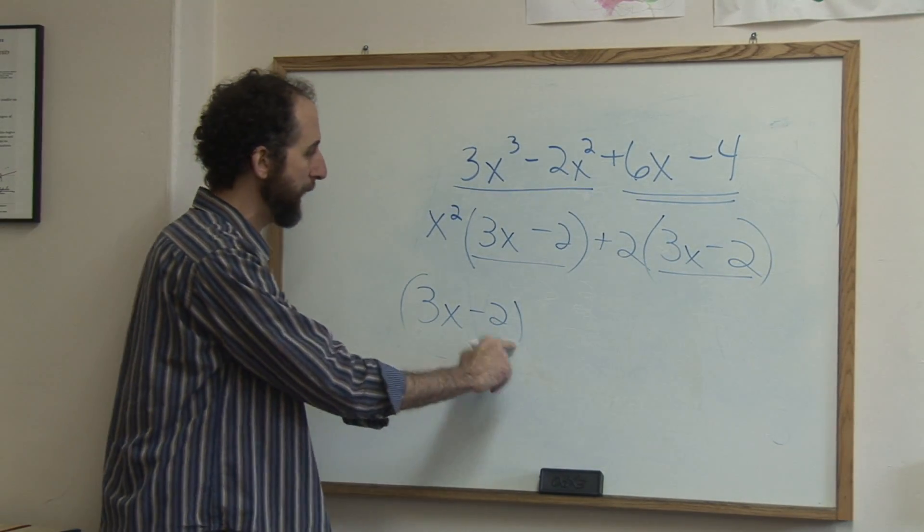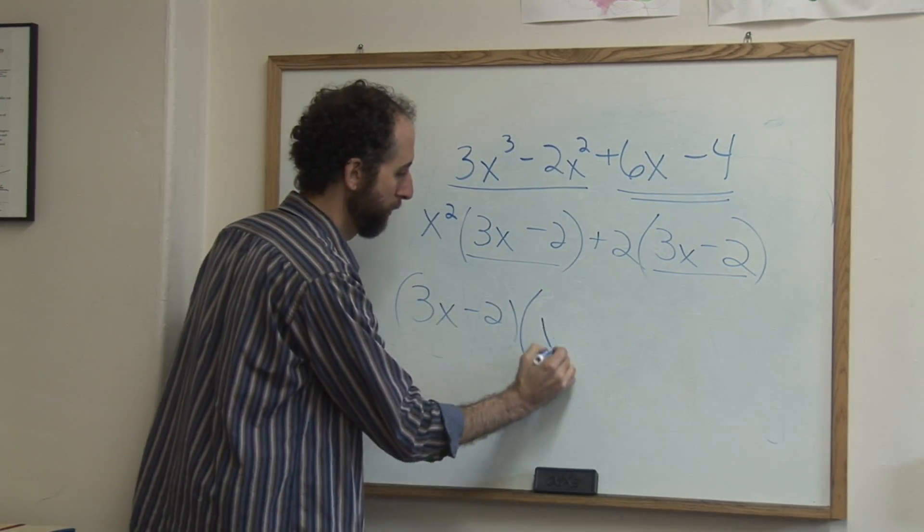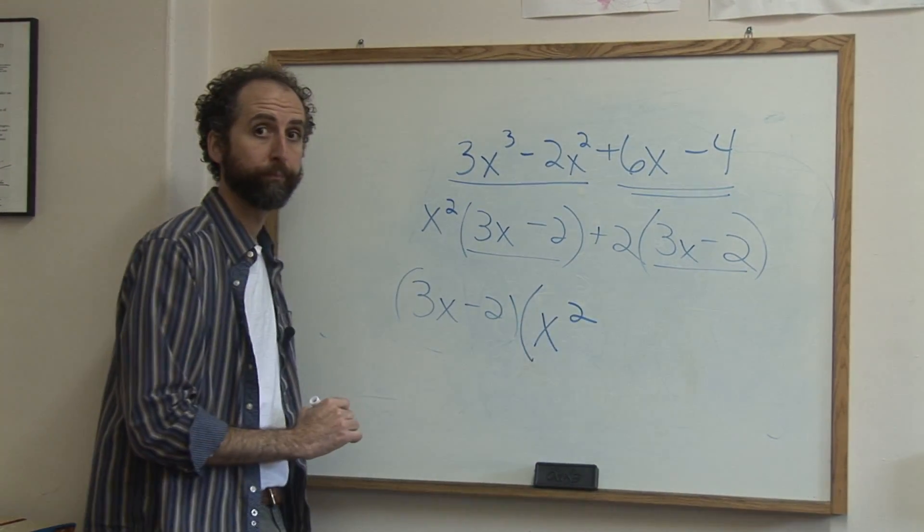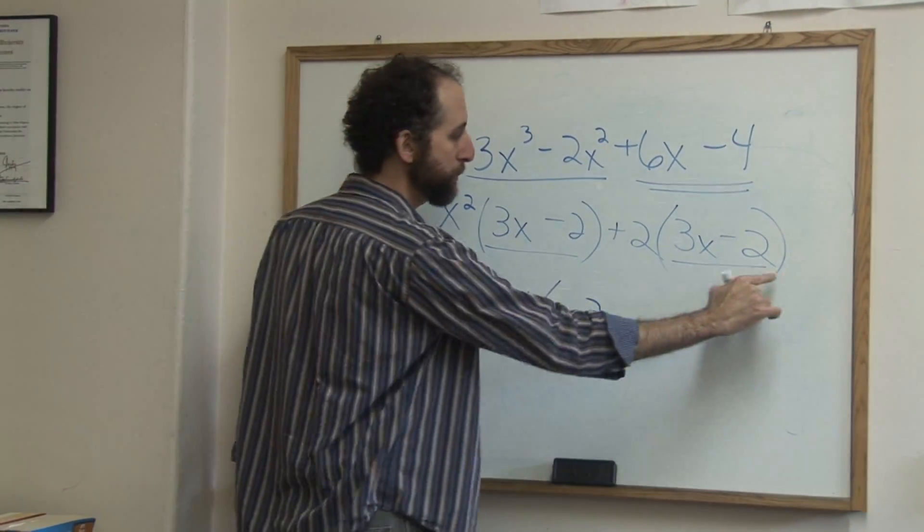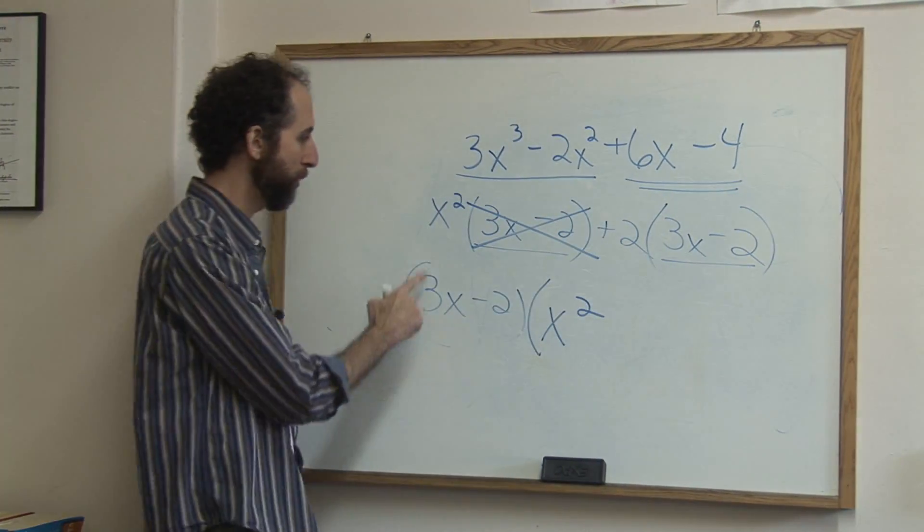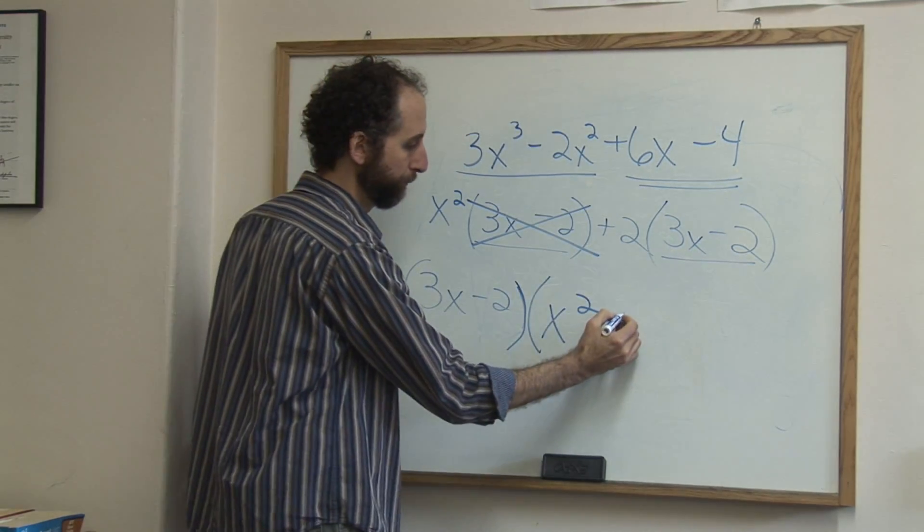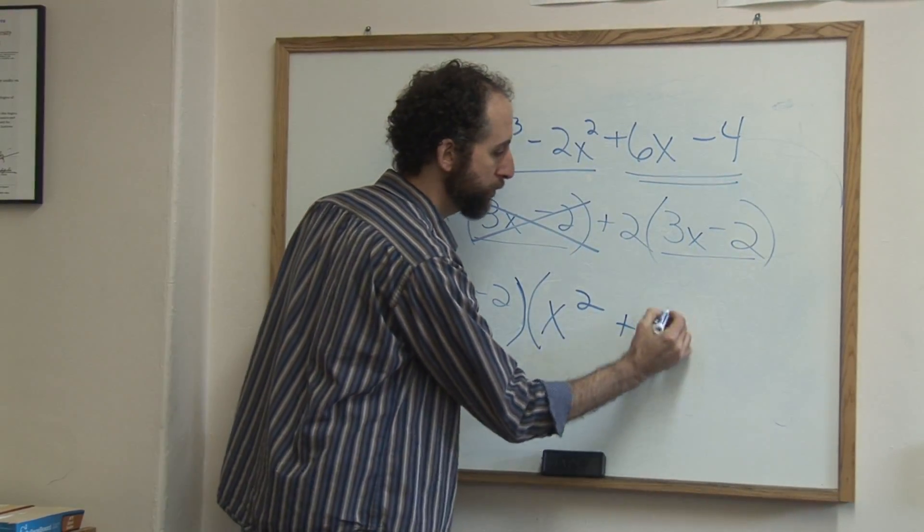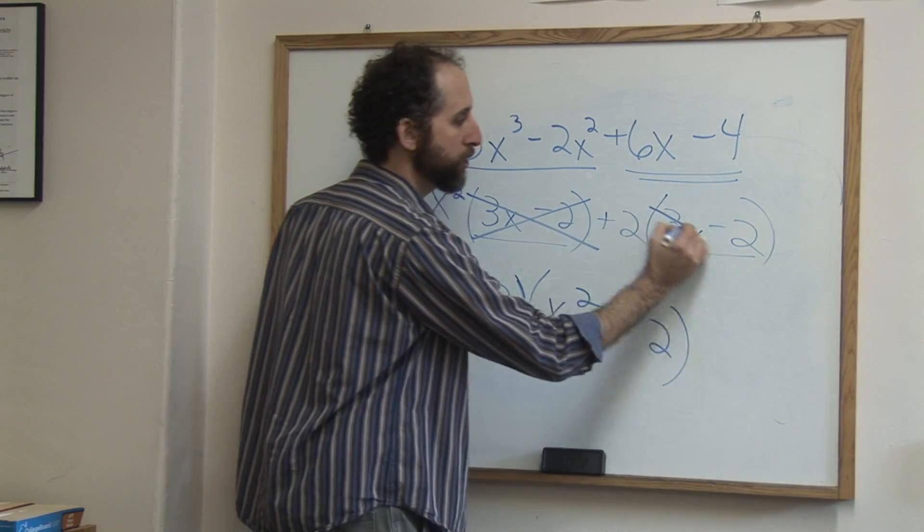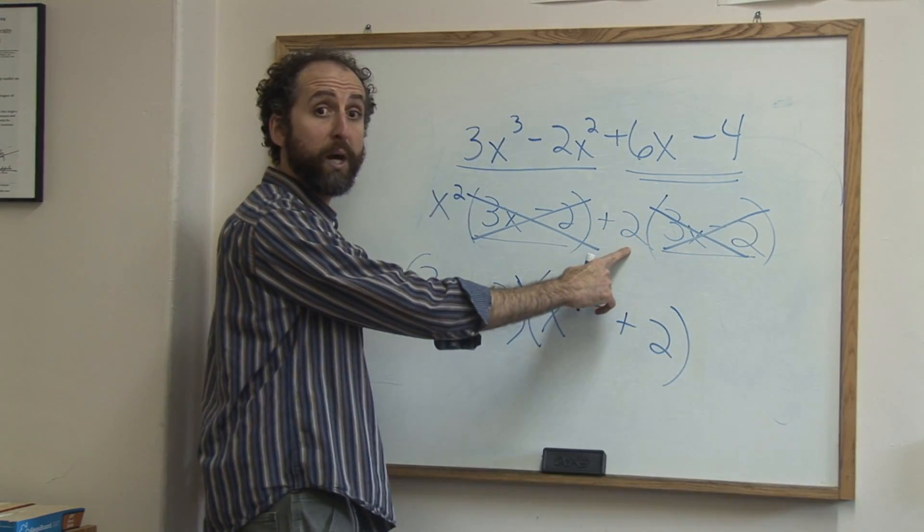When I pull this out of this part, I'm left with x squared. When I pull it out of this part, it's like I've pulled it out, it's not there anymore, we just have x squared. When I pull it out of this part, I'm left with positive 2. Because when I take 3x minus 2 out, I'm just left with positive 2.